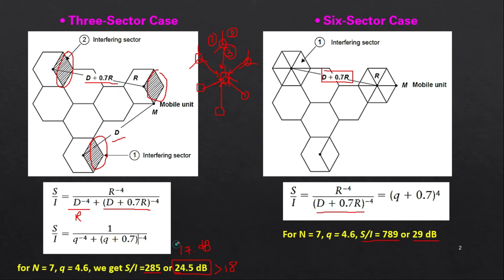So comparing: with an omnidirectional antenna we have 17 dB, with three sectors we have 24.5 dB, and with six sectors we have 29 dB — progressively better. But the question is: should we go for six sectors or three sectors? This depends on the capacity we want to provide, because as you divide a cell into more sectors, the per-sector capacity decreases.